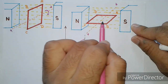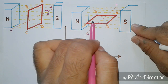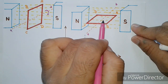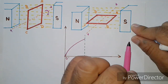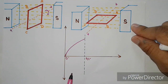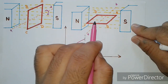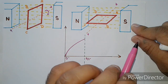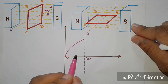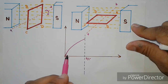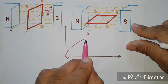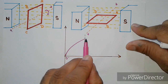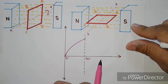The conductor cuts the magnetic flux, and at this position the rate of flux cutting by the conductor is maximum — because the conductor and flux are perpendicular to each other. Therefore, the current induced in the conductor is maximum, as you can see in the waveform where the current is at its maximum position.